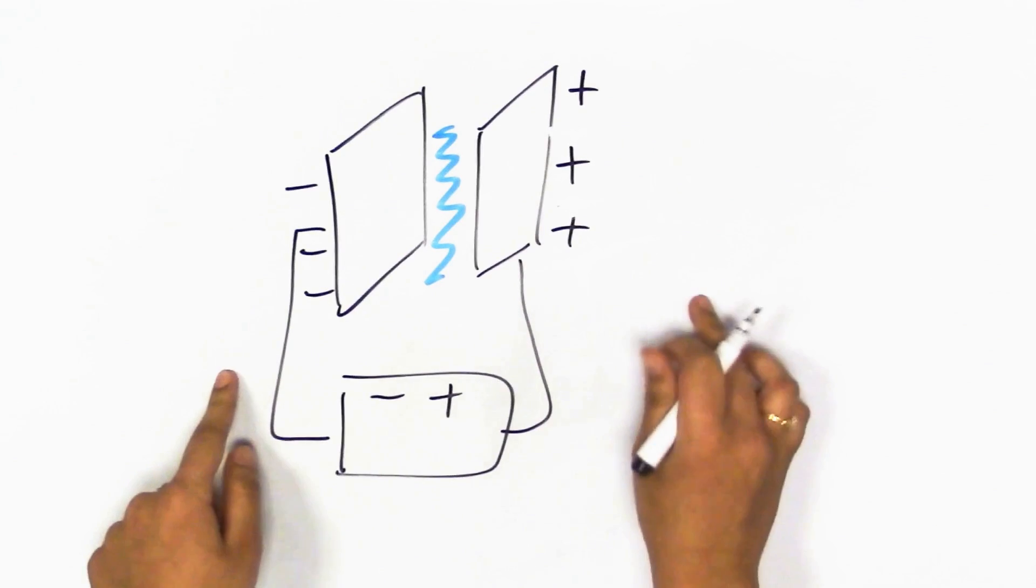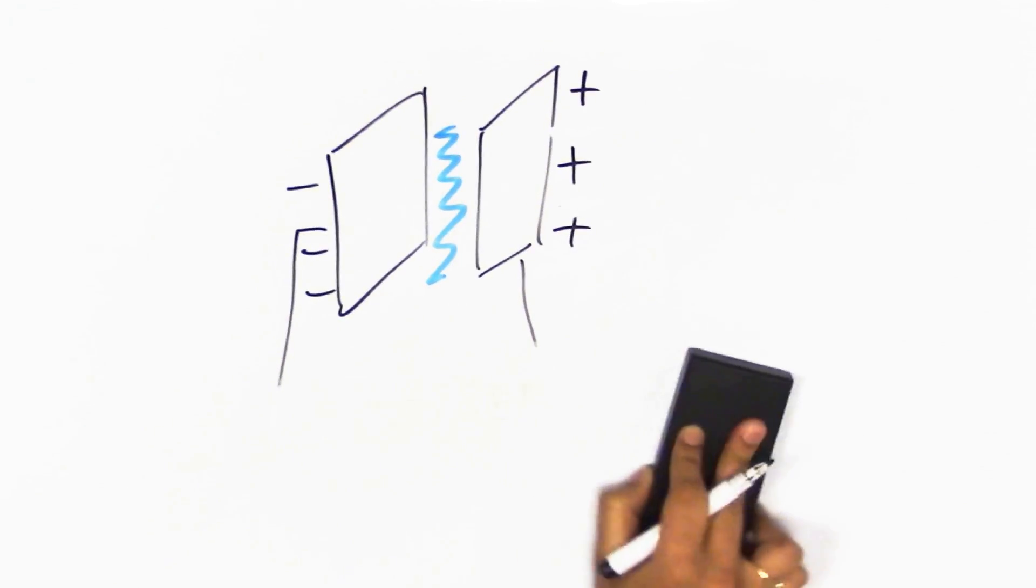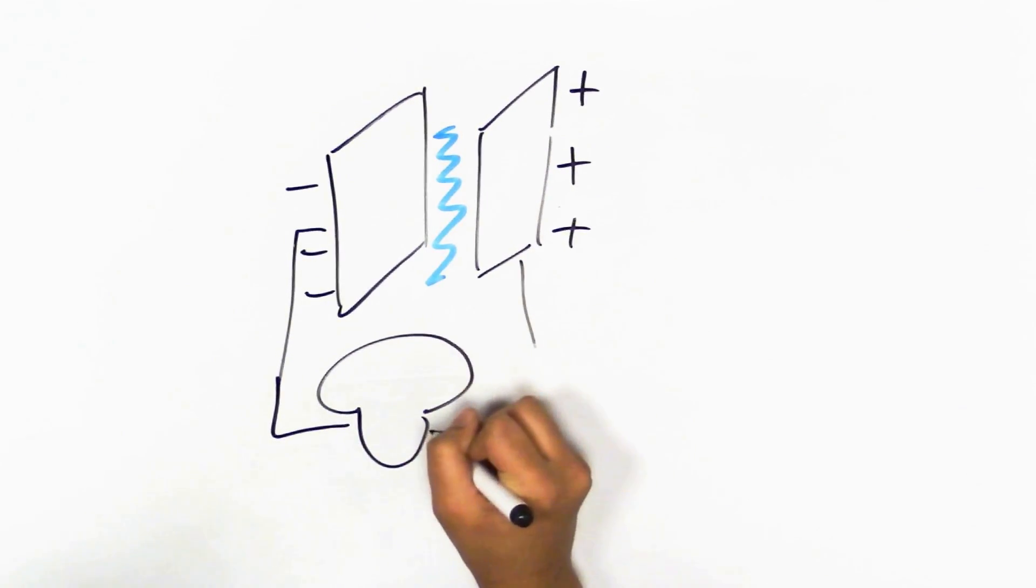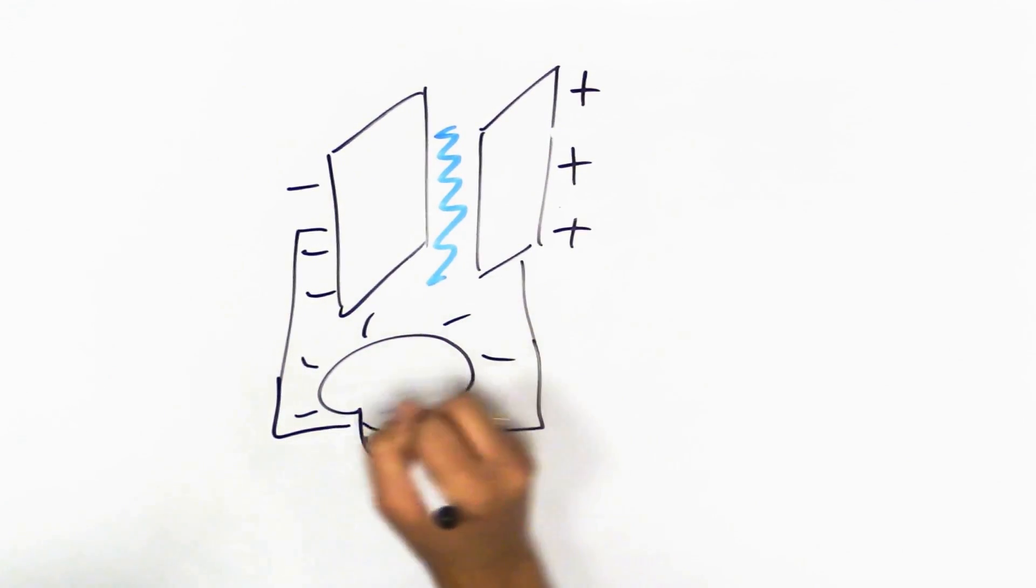The difference in charge creates a voltage across the capacitor, and this voltage can be used to power another circuit element, like a light bulb.